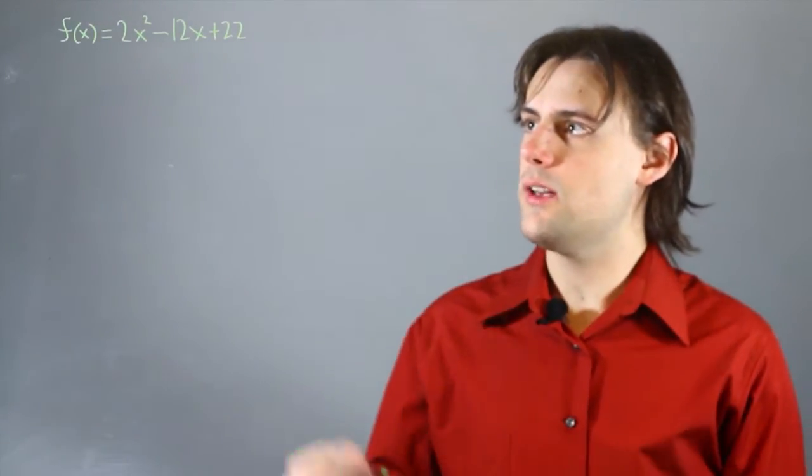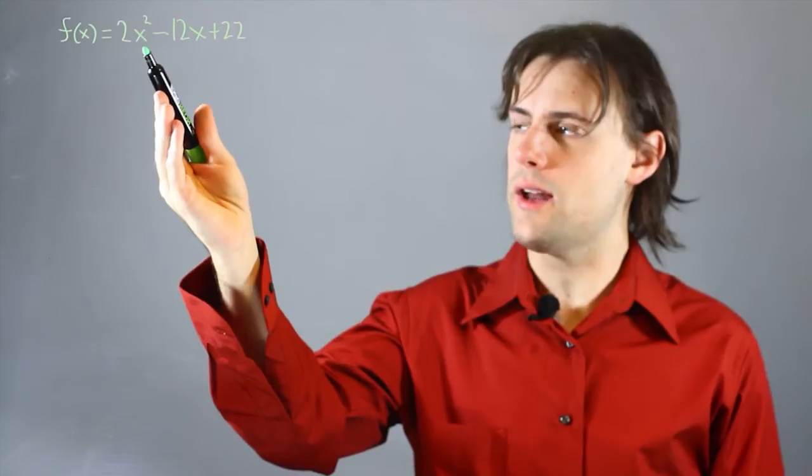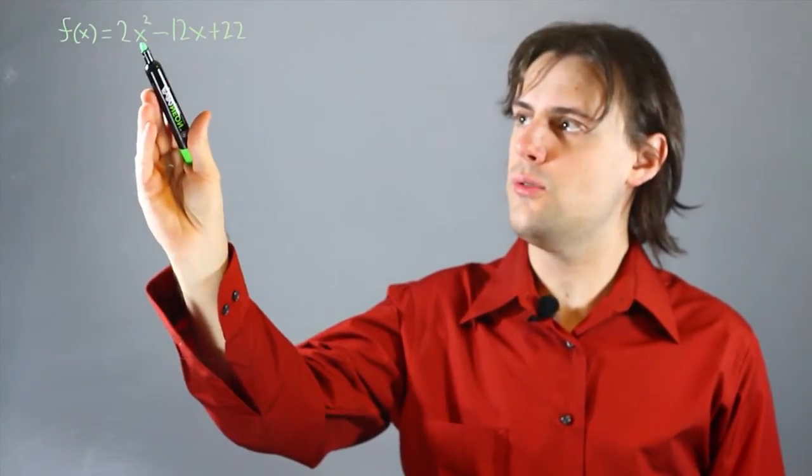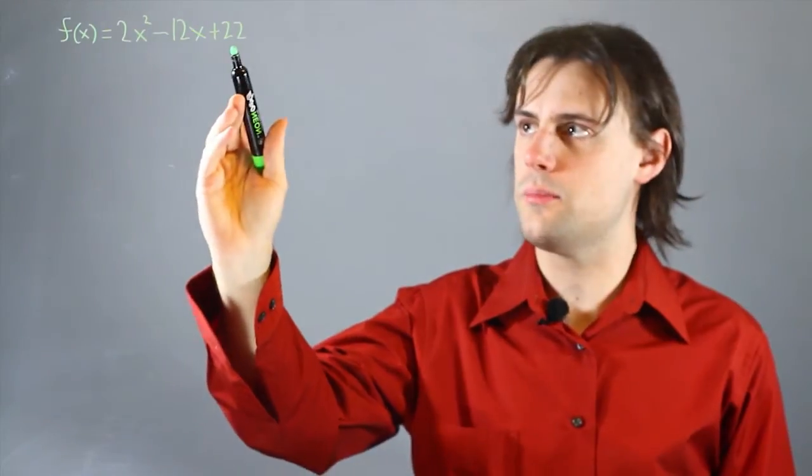So if we're given a polynomial, in this case a quadratic polynomial, we have f of x is equal to 2x squared minus 12x plus 22.